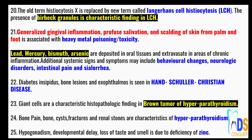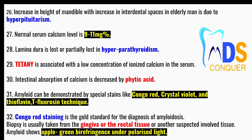Point number twenty-five: hypogonadism, developmental delay, and loss of taste and smell is due to deficiency of zinc. Point number twenty-six: increase in height of the mandible with increase in interdental spaces in an elderly man is due to hyperpituitarism.